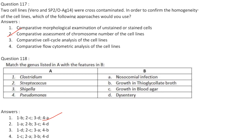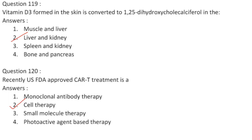Match the genus with features: Clostridium — growth in thioglycolate broth; Streptococcus — growth on blood agar; Shigella — dysentery; Pseudomonas — nosocomial infection. Answer is 1B, 2C, 3D, 4A. Option 1. Vitamin D3 formed in the skin is converted to 1,25-dihydroxycholecalciferol in the liver and kidney. Answer is option 2.